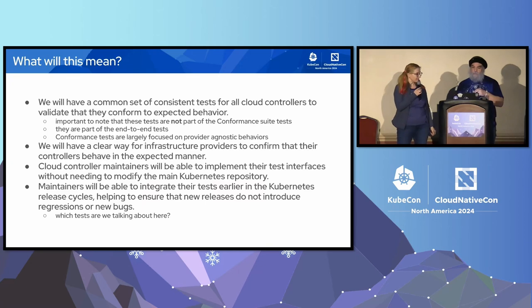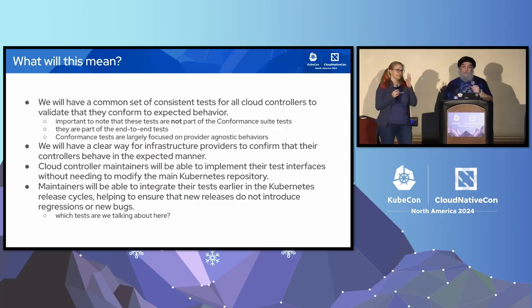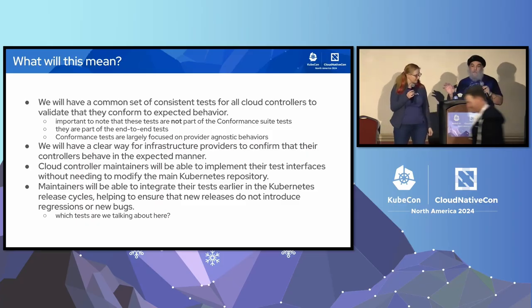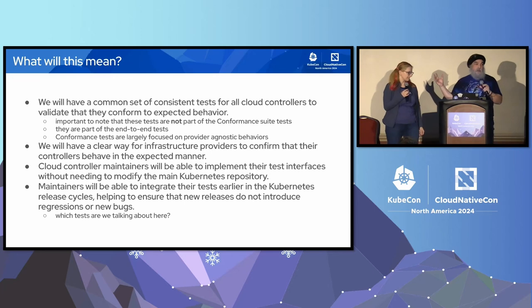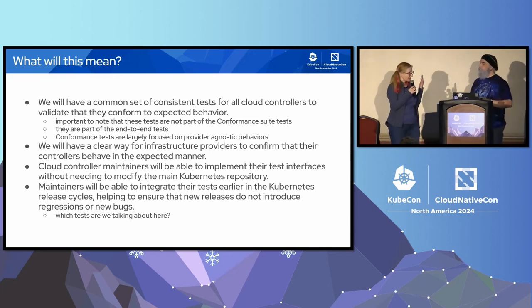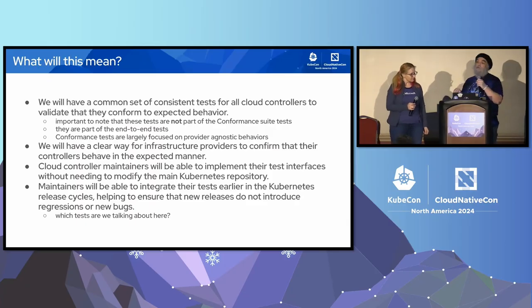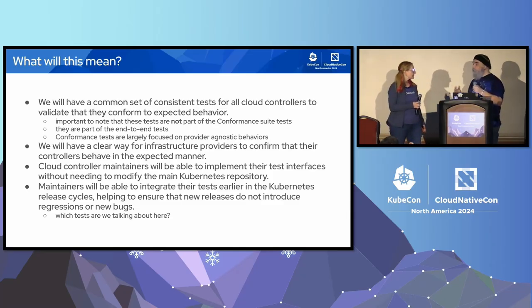We went to all the effort of having the infrastructure be community-controlled, so we want that to gate the release. In practice, we'll have a consistent set of tests that can be run on every cloud provider with the same expected behavior. These tests are not part of the official conformance suite — they're part of the end-to-end tests. Conformance tests are largely focused on provider-agnostic behaviors, so this would be in the E2E tests for Kubernetes. Each provider can run the tests on their own to gain confidence in releases.